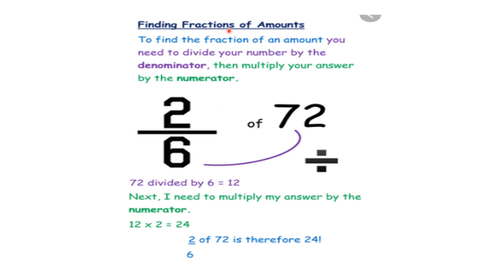Finding fraction of amounts: to find the fraction of an amount, you divide your number by the denominator, then multiply your answer by the numerator. For example, seventy-two divided by six is equal to twelve. Then twelve multiplied by two is equal to twenty-four. So two over six of seventy-two is therefore twenty-four.